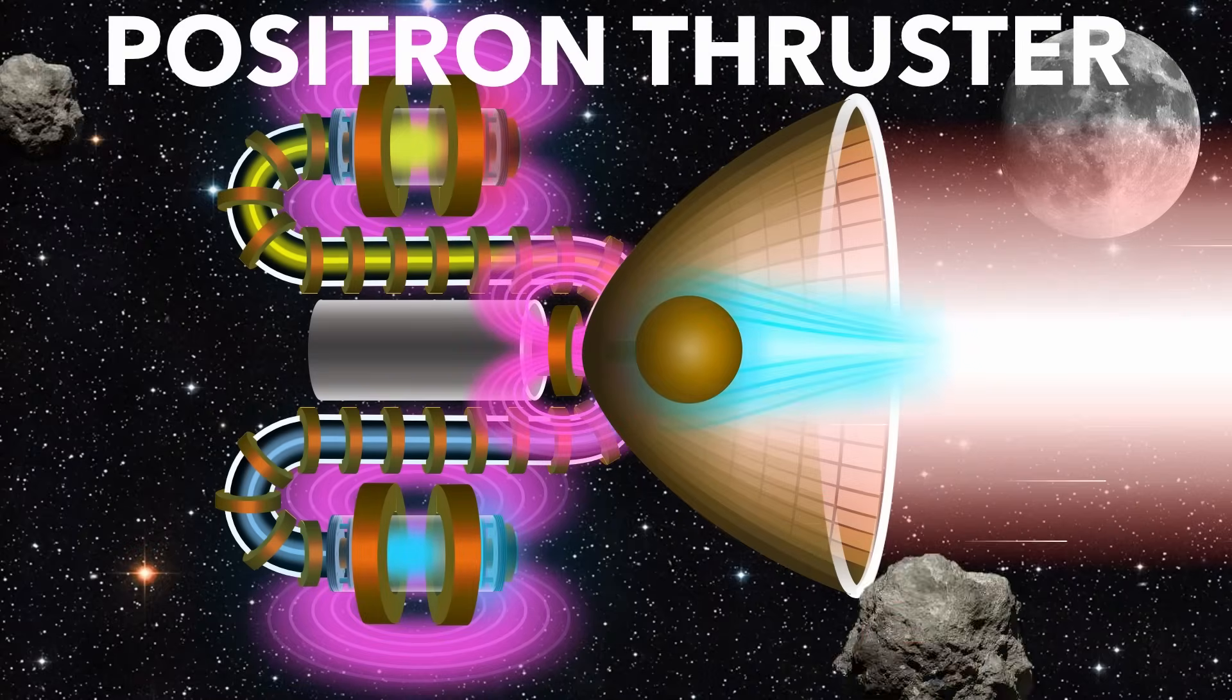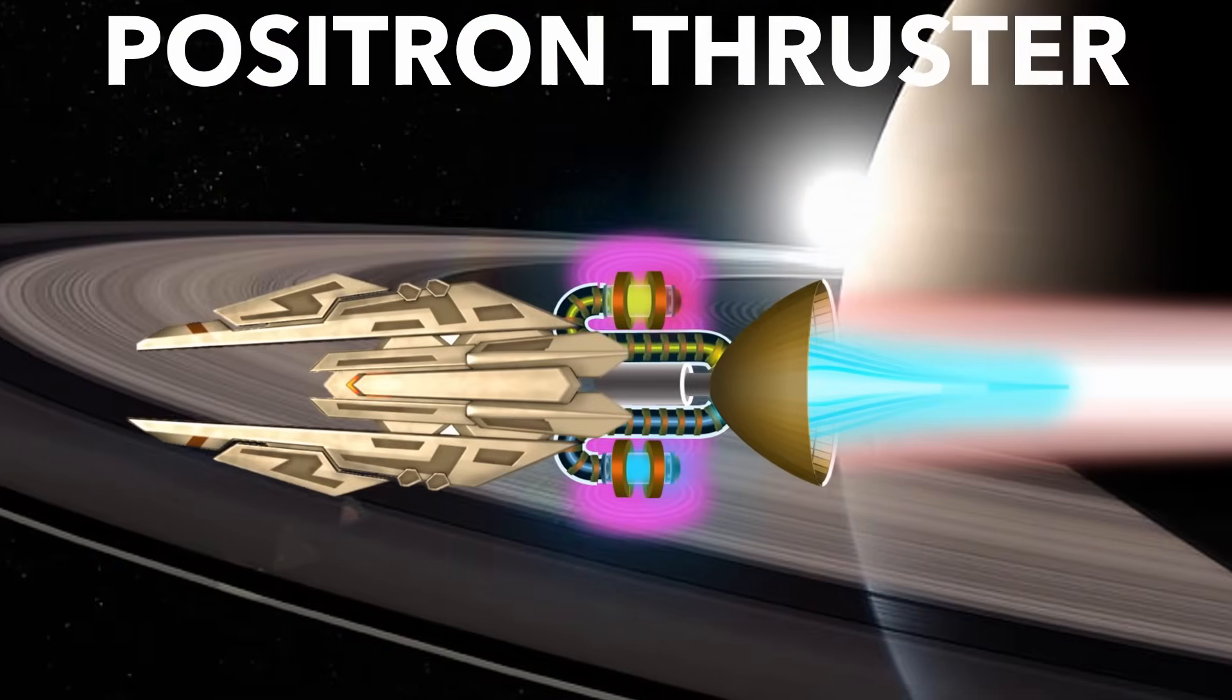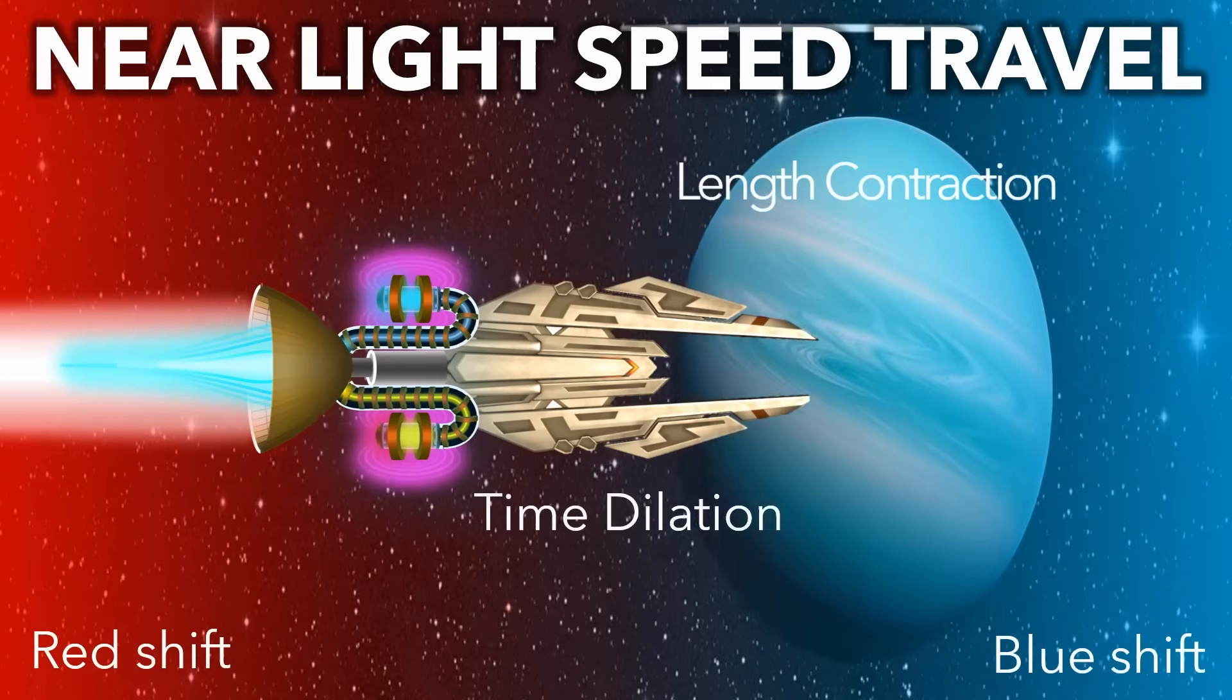This is a positron thruster, a real concept for an antimatter powered rocket capable of near light speed travel.